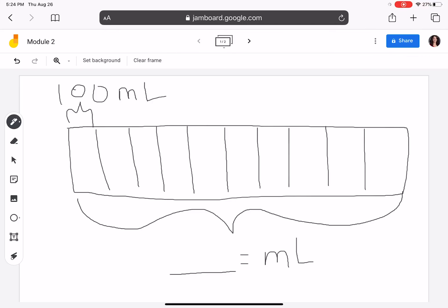100, 200, 300, 400, 500, 600, 700, 800, 900, 1000. So I can say that the punch bowl has 1000 milliliters. Or I can say that it has one liter.